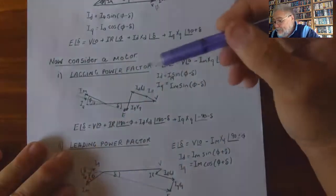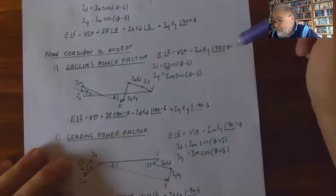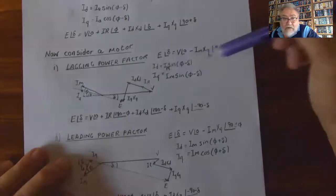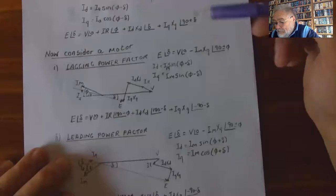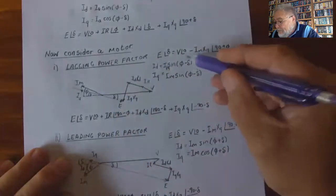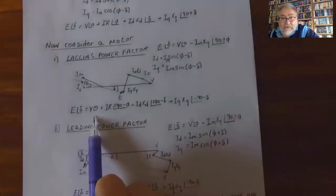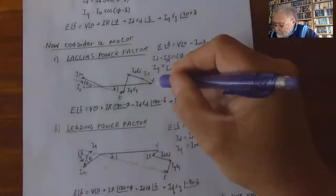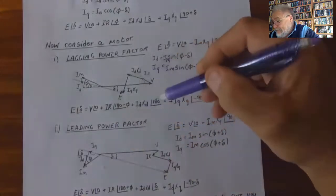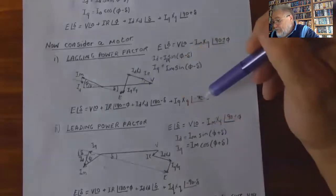For a motor with lagging power factor: E∠δ = V∠0 − Im·Xq∠(90 ± φ), giving Id = Im·sin(φ − δ) and Iq = Im·sin(φ − δ). The angles φ and δ appear separately in the diagram, which is why there is a difference between the two components. Accordingly, E∠δ = V∠0 + Ir∠(180 − φ) + Id·Xd∠(180 − δ) + Iq∠(−90 − δ).